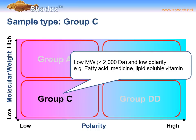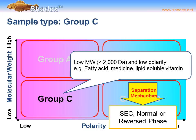Returning to our molecular weight versus polarity graph, group C comprises low molecular weight, low polarity compounds. Examples include fatty acids, small molecule pharmaceuticals, and lipid-soluble vitamins. The separation mechanism offers a choice of size exclusion chromatography or normal or reversed phase chromatography.